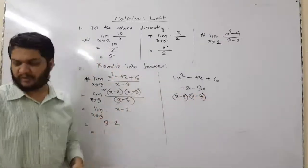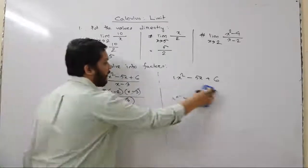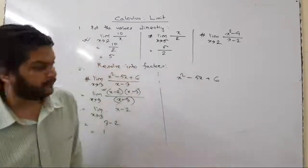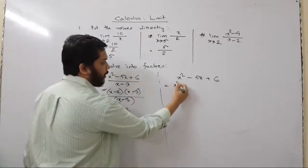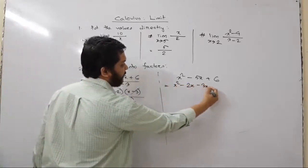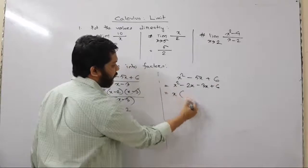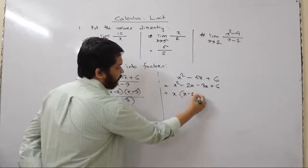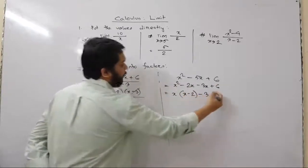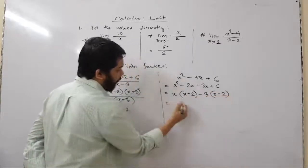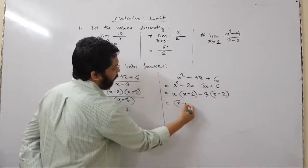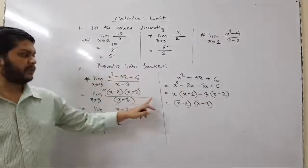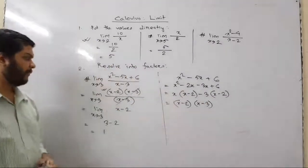To verify the factorization: expanding (x - 2)(x - 3) gives x² - 2x - 3x + 6, which equals x² - 5x + 6. Taking x as common from the first two terms gives x(x - 2), and -3 common from the last two gives -3(x - 2). Factoring out (x - 2) gives (x - 2)(x - 3), confirming our result.